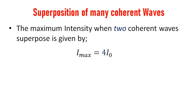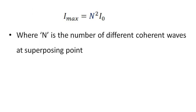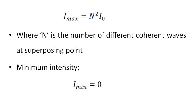We can extend this to n coherent waves. Rewriting: Imax = 4i0 = 2²·i0. So for n coherent waves, Imax = n²·i0, where n is the number of coherent waves at the superposing point. The minimum intensity Imin = 0 regardless of whether there are two waves or n waves. That is the minimum value of I when many coherent waves superpose.